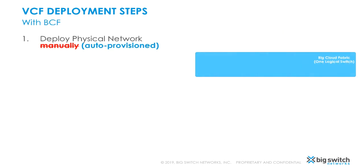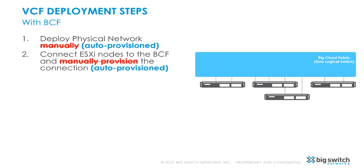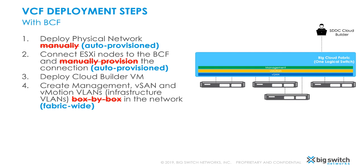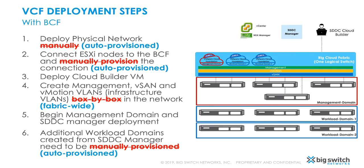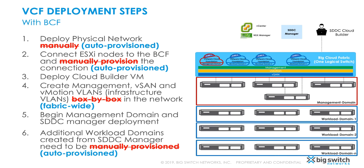Now let's revisit the VMware Cloud Foundation deployment steps, but this time using BCF. Physical network no longer needs to be manually provisioned. ESXi nodes can be physically connected anywhere in the fabric and they get auto-discovered without any manual provisioning. The management, vSAN, and vMotion VLANs are now fabric-wide, so no box-by-box configuration is required. eVPCs will be created for each workload domain, thus providing all the benefits of eVPC automation and visibility.